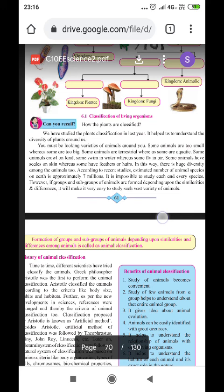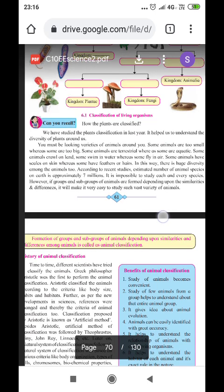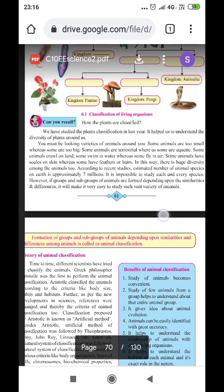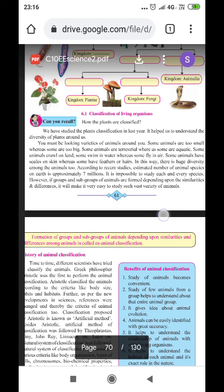Some animals crawl on the land, some swim in the water, whereas some fly in the air. Some animals have scales on the skin, whereas some have feathers or hairs.